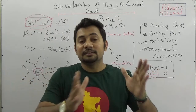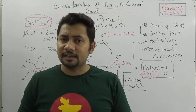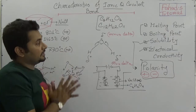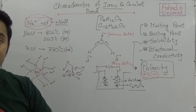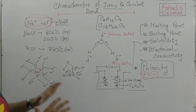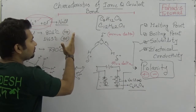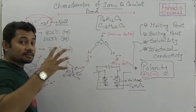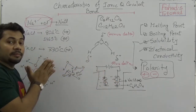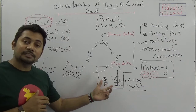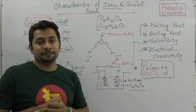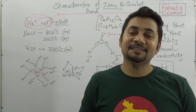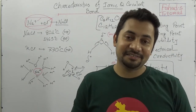I'll upload another class on the differences between ionic and covalent compounds with some more detailed formatting. I hope you understand the characteristics of ionic and covalent compounds. It should be clear that the melting and boiling point of ionic compounds is higher than covalent compounds, ionic compounds are soluble in water because they create polarity, and ionic compounds are electrical conductors while covalent compounds are not, because covalent compounds don't create polarity. See you in the next class — take care, stay well, bye bye.